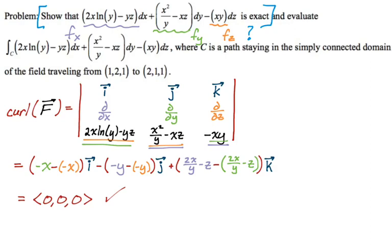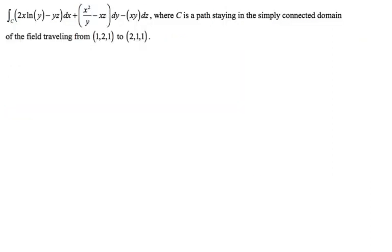So we showed that this thing is exact, so now what we want to do is try to find a potential function. Okay, so keeping in mind that we have partial x, partial y, partial z, we're going to do that thing where we just integrate three times, make some comparisons, see what we can do.